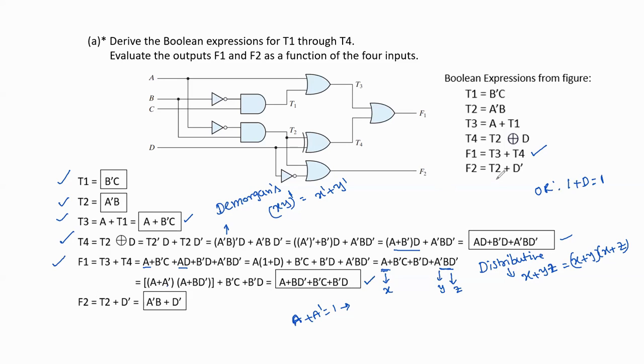For f2 = t2 + d'. Since t2 = a'b, we have f2 = a'b + d'. So these are the final expressions for the output variables f1 and f2.